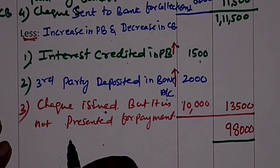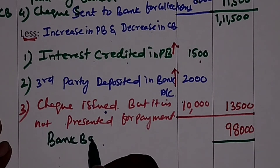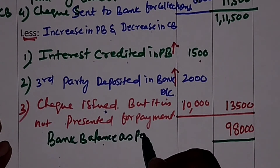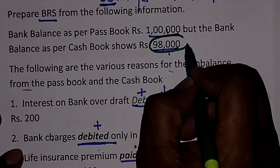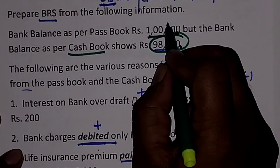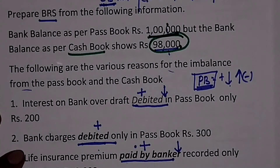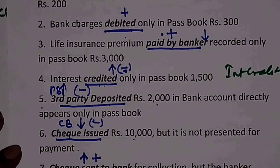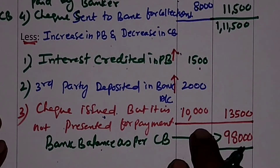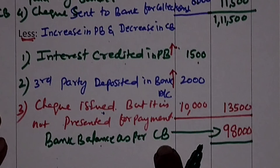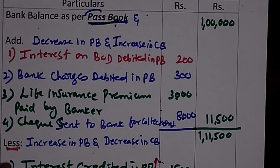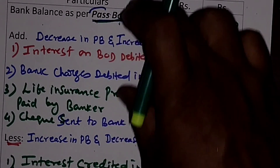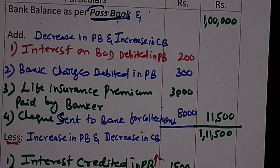This rupees 98,000 is the answer — bank balance as per cash book. In the question, bank balance as per cash book is 98,000 and pass book shows 1 lakh. The difference is only 2,000 but there are 7 different transactions in the question. In another video, I will explain the same problem by taking cash book as the first value. At that time, all the minus entries will become plus entries and the plus entries will become minus. That is the trick of this chapter — it is not at all difficult. Thank you very much for watching this video.